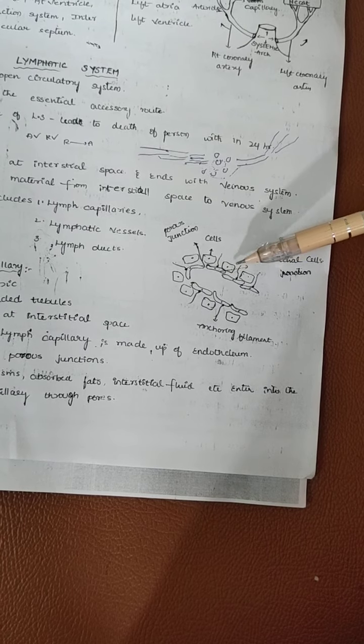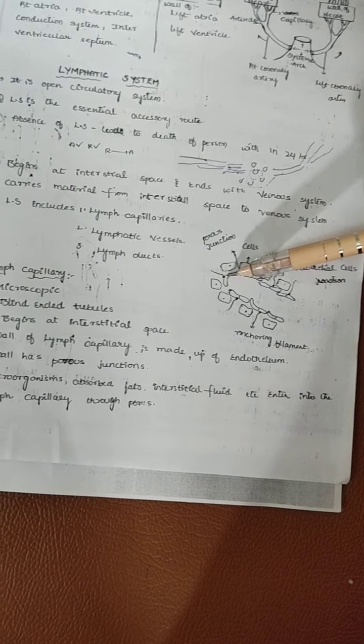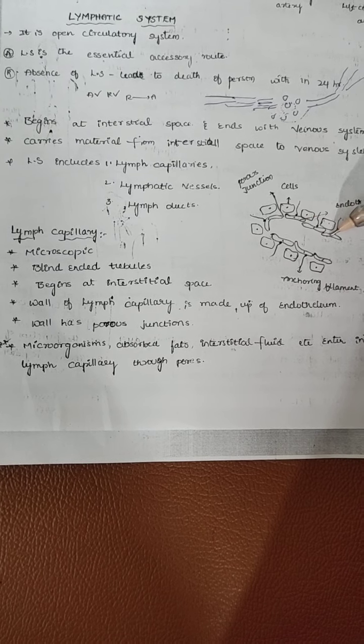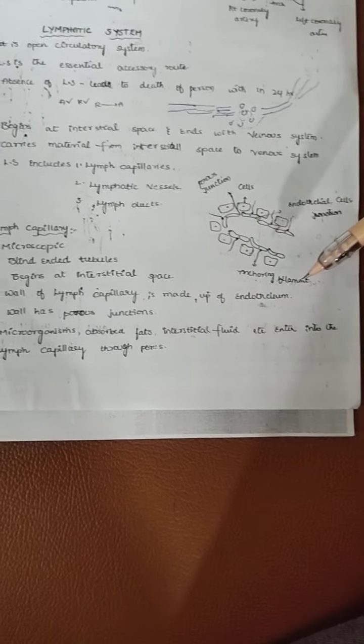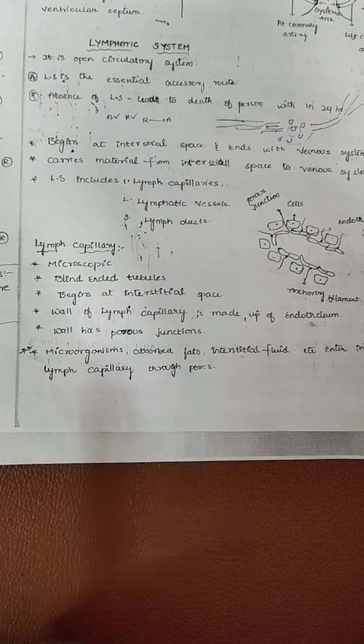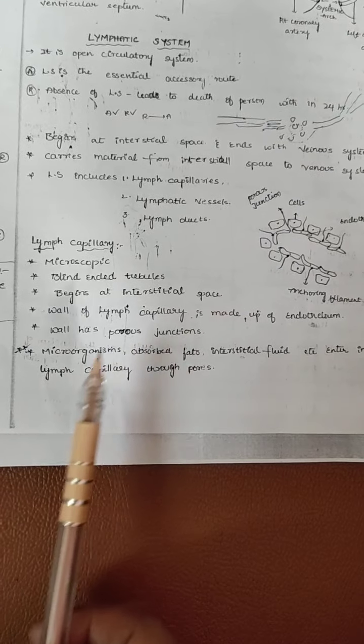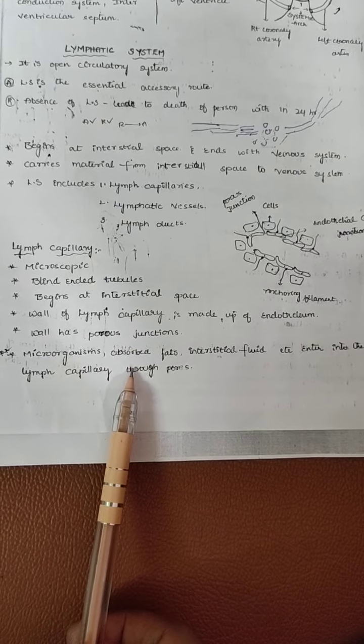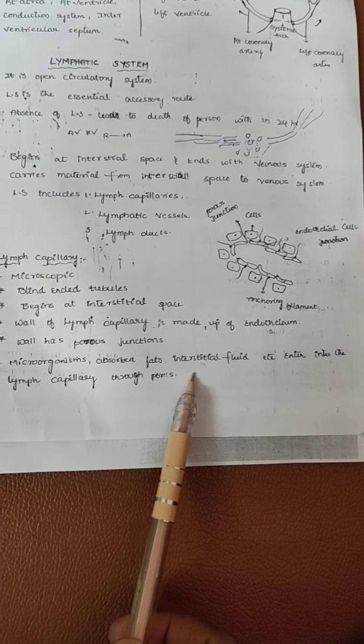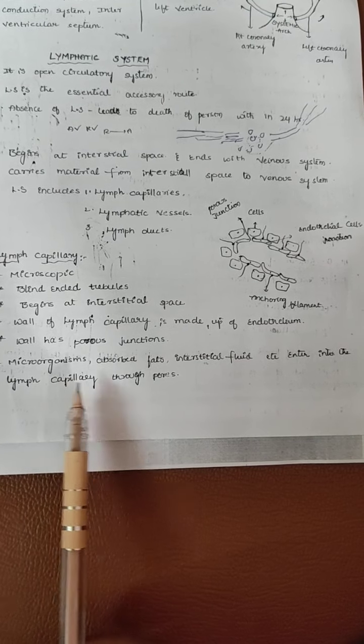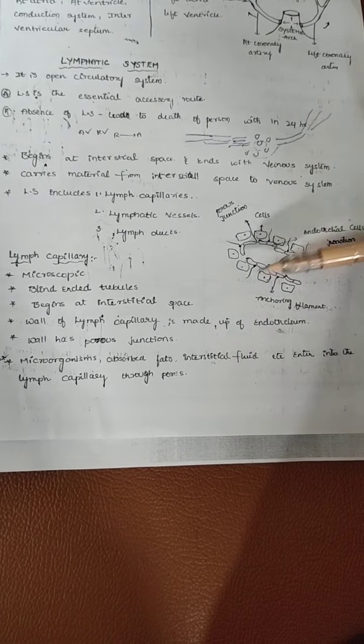The endothelium cells have a gap between them. Lymphatic capillaries are microscopic blind-ended structures made up of endothelium cells and they have a porous junction. Through this porous junction, microorganisms and absorbed fats and interstitial fluids enter into the lymph capillaries.